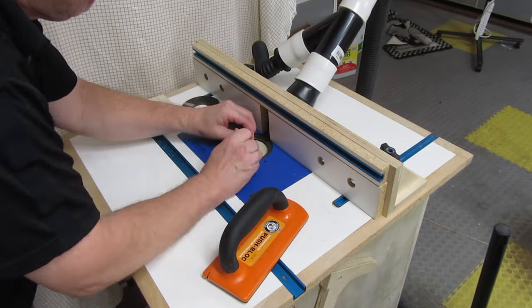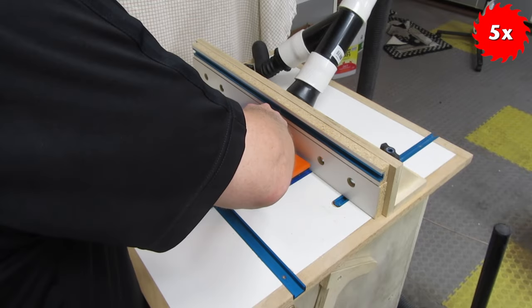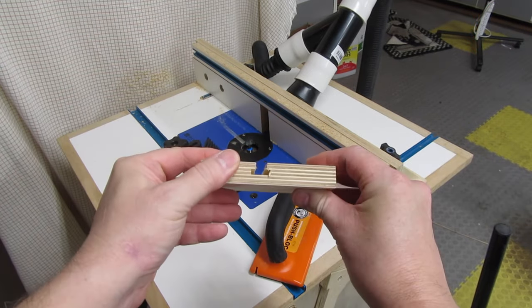Then I use the Rockler bit, set to a height of three-eighths of an inch. And here's the result.